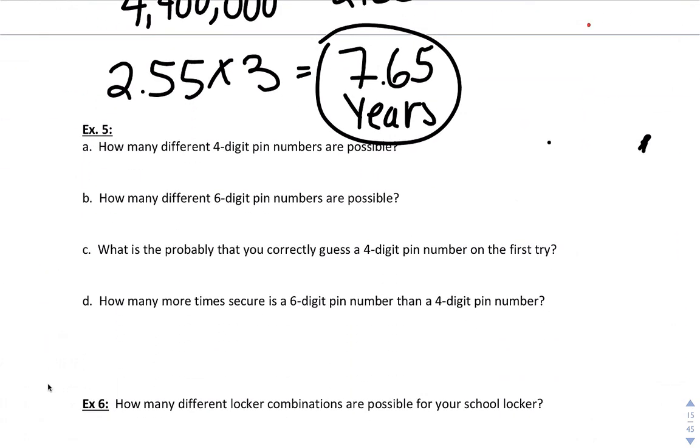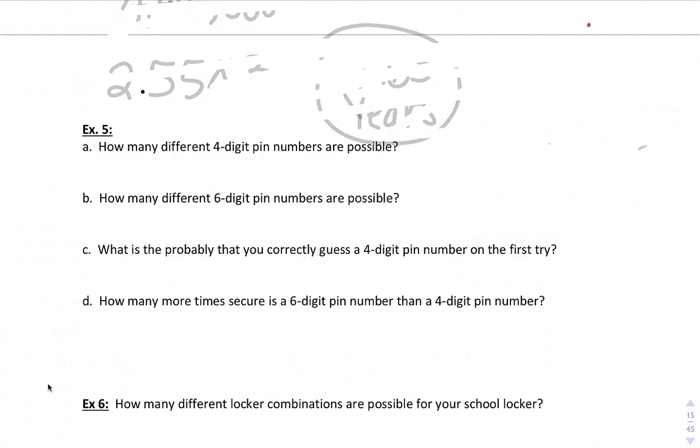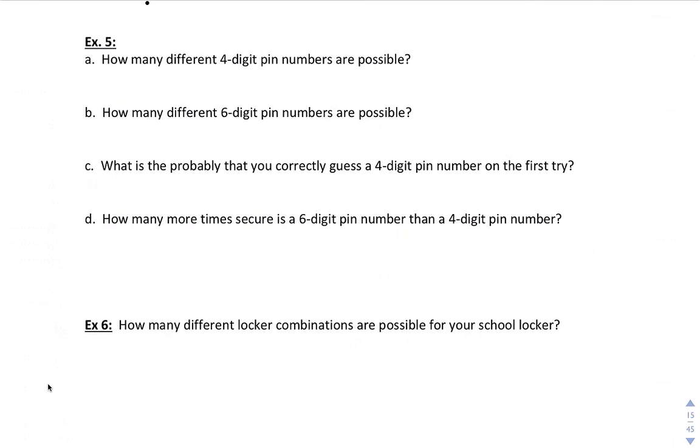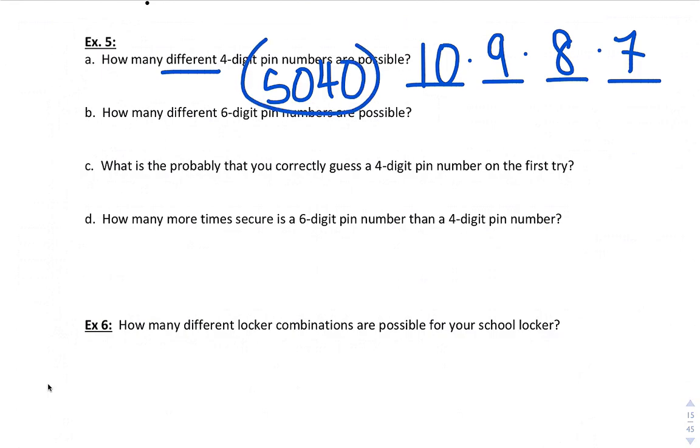Last two examples. Let's say you have a PIN number, and it's a four-digit PIN number. How many different four-digit PIN numbers are possible? Well, I'm assuming that different means that you can't repeat. So we'll assume you cannot repeat a digit once you already have one. So that would give us 10 choices for the first, 9 choices for the second, 8, and 7 choices. So if you multiply that out, I think it's 5,040, if repetition is not allowed.